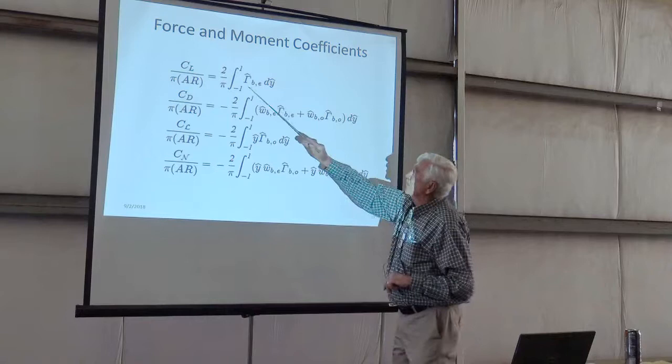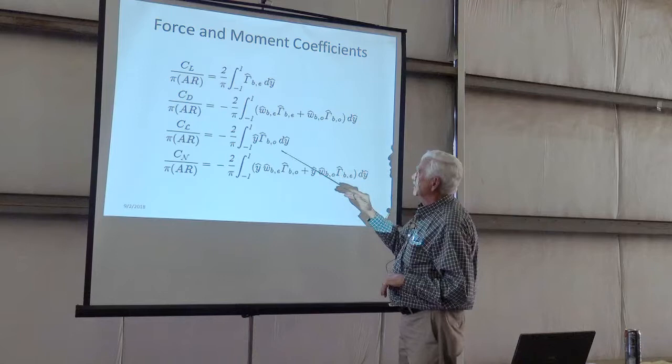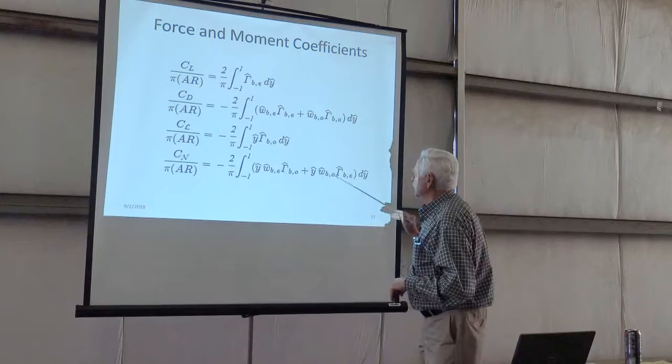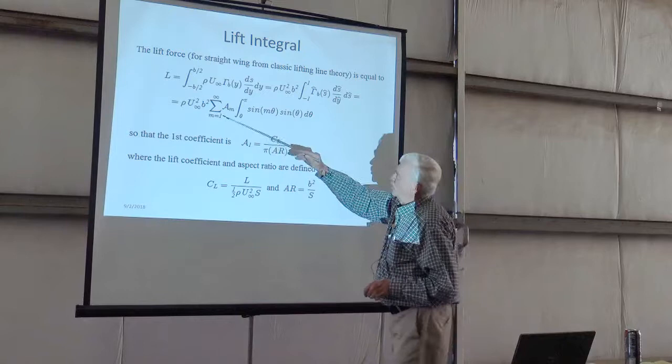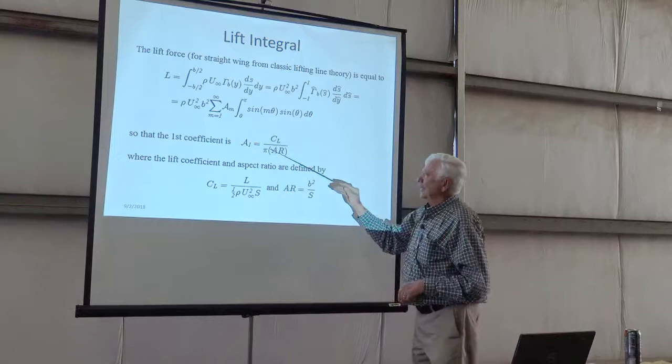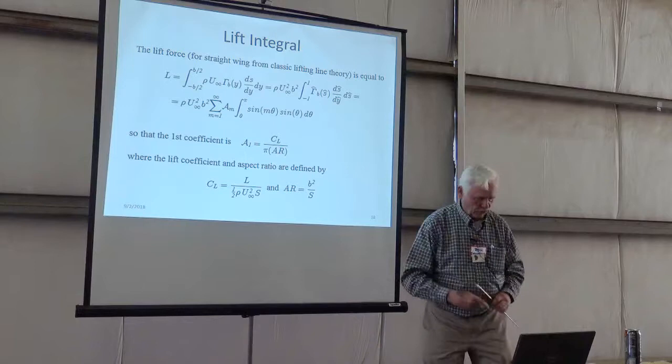So here are my coefficients. This is the lift coefficient term. The drag coefficient has two terms, one for the even coefficients and one for the odd coefficients. Here's the yaw moment coefficient. And here's the roll moment coefficient. And I was going to go through these things one at a time. When you put in the Fourier series expansion to this, only the first term comes out. And so the first term is equal to the lift over pi A. That looks familiar doesn't it? Lift coefficient over pi times aspect ratio.